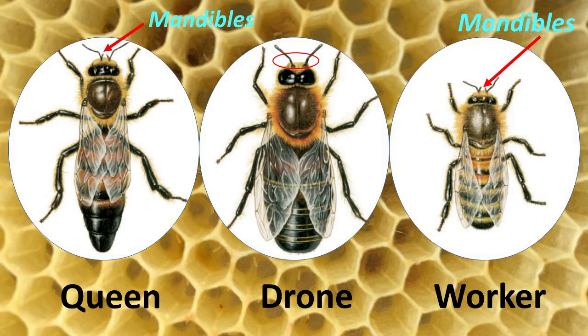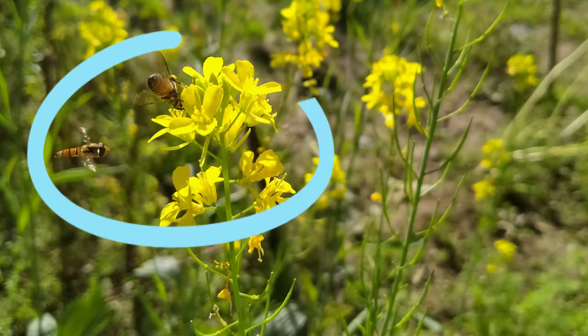Drones don't have mandibles. Only with the help of a mandible can a bee actually chew its food. Now you can ask me: if a male bee doesn't have a mandible, then how is it surviving without being able to eat its food? To know the answer, keep watching the video till the end.